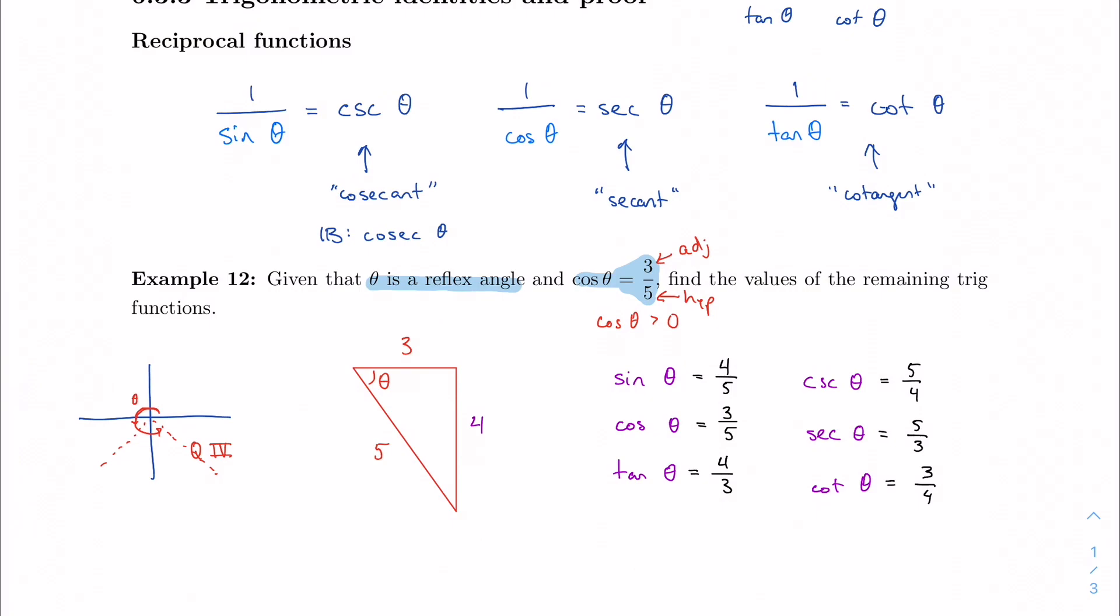Now, however, we're actually not done. I realize I just missed something, which is the sign, S-I-G-N, of each of these functions. Because only cosine is positive in the fourth quadrant. So sine should actually be negative. Tangent should be negative. And since sine is negative, then cosecant is also negative. Since tangent is negative, cotangent is negative. So we want to make sure we adjust positive or negative based on the quadrant we're in. Because I'm in quadrant four, cosine only and its reciprocal are positive. Everything else is negative.